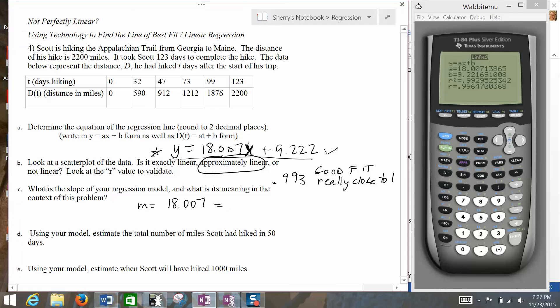In this case, we're looking at how the days hiking relates to the miles. So in this case, our slope is the miles that Scott covered each day on average. Obviously, it's not going to be a perfect fit, but it should be pretty darn close.